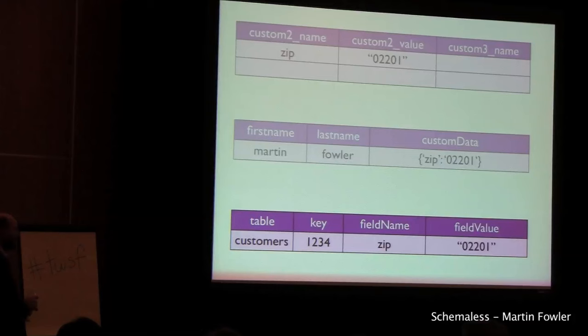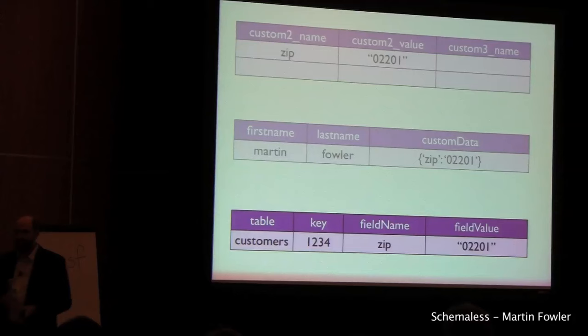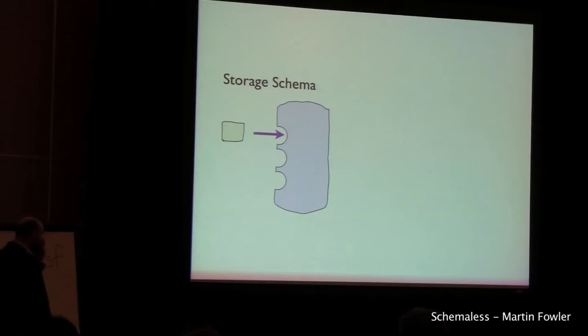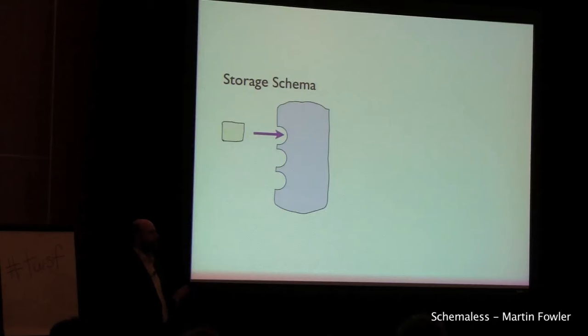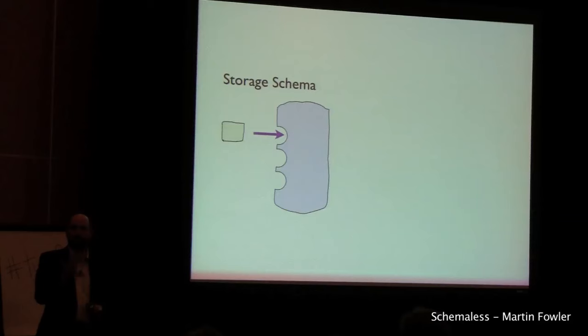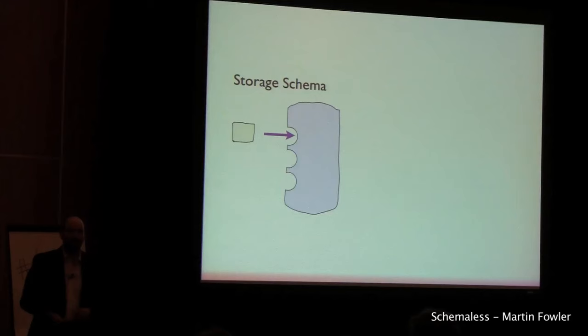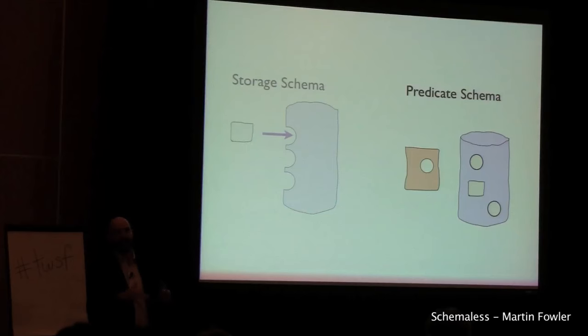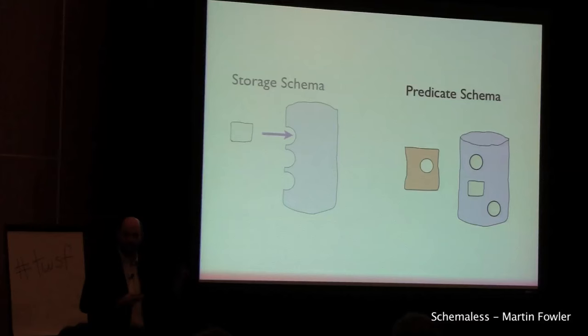So schemaless stuff exists in databases, in memory, and often in forms that aren't particularly obvious. I tend to think there are two styles of schema. So far I've talked about schemas in terms of a storage control mechanism — a relational database schema stops you putting the wrong kind of data in at all; you can't put square pegs into round holes. But there's another approach I refer to as a predicate schema, which basically says: we'll store whatever data you like, but we use the schema as a mechanism to test whether the stored data is in the appropriate shape.